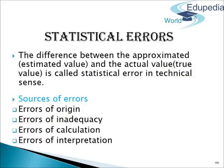Second Error — Errors of Inadequacy: These errors arise on account of incomplete data, an inadequate number of items in the sample, non-response of respondents, incomplete answers in questionnaires, and misinterpretation of questions in the questionnaire.